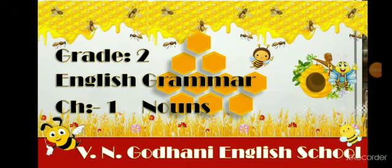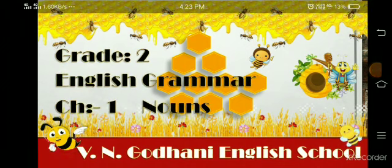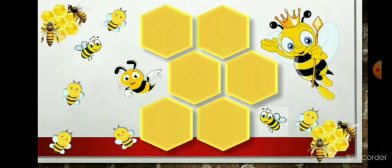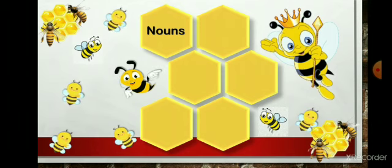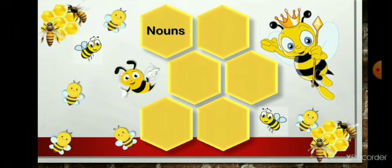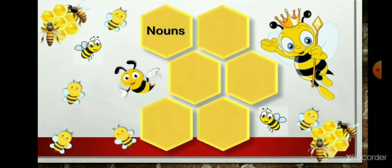Hello, dear all. Welcome to your English grammar class. In this video, we are going to learn chapter number 1, Nouns. Let's understand what are nouns. Everything around us has a name that we can see with our eyes. They are called nouns. All the naming words are called nouns.